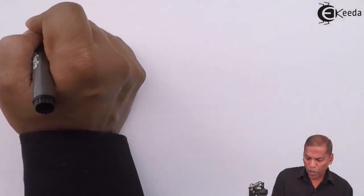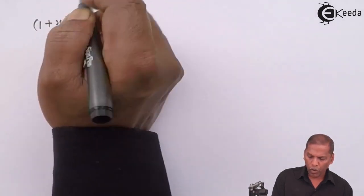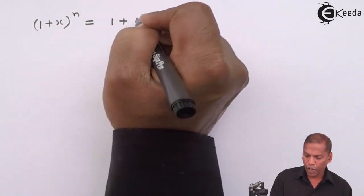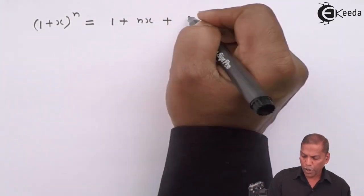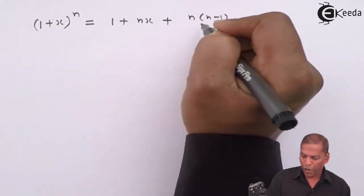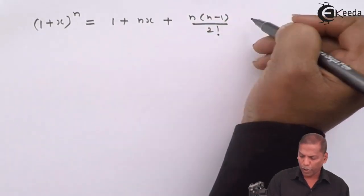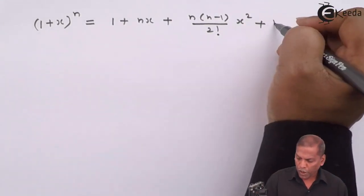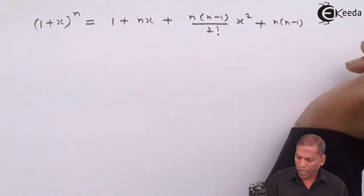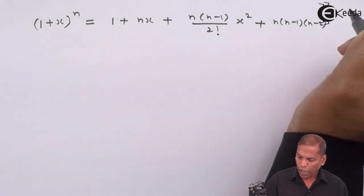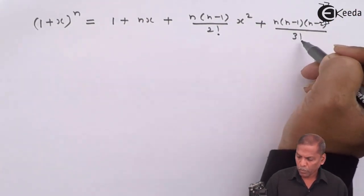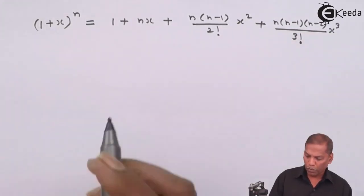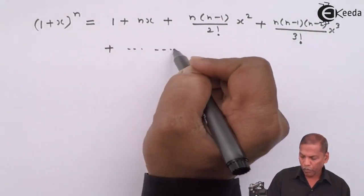The formula is (1+x) raised to n equals 1 plus nx plus n(n-1) upon 2 factorial times x squared plus n(n-1)(n-2) upon 3 factorial times x cube plus continuing on.